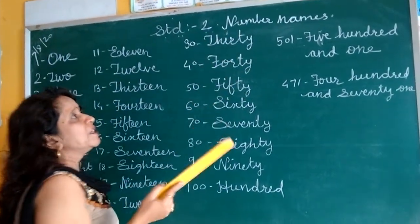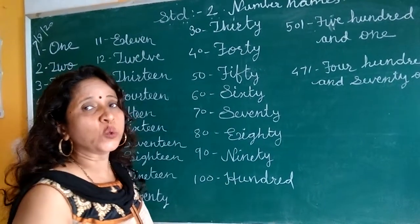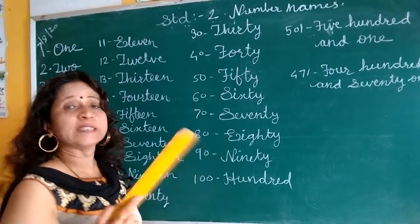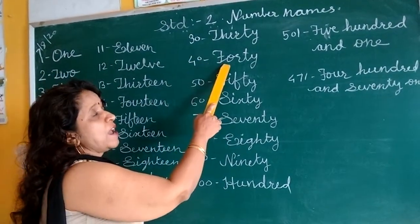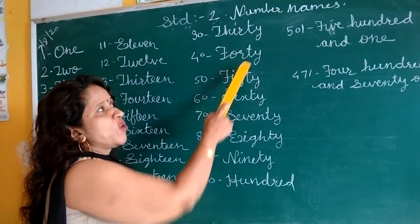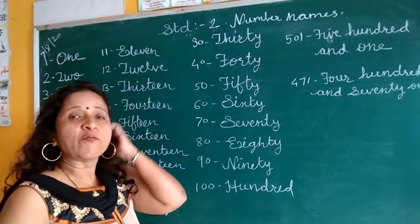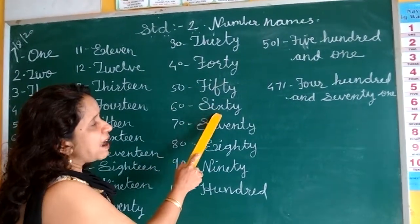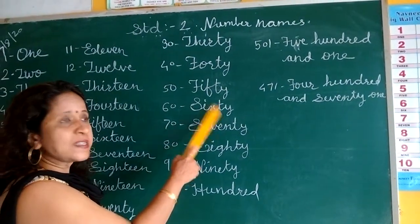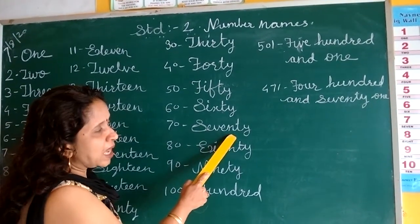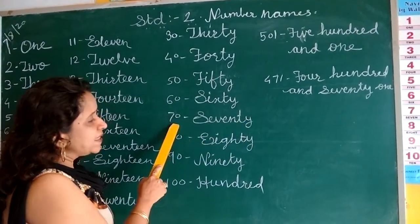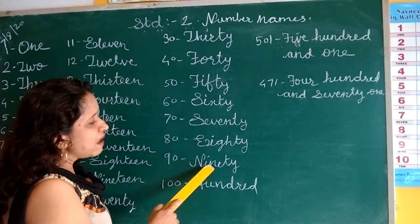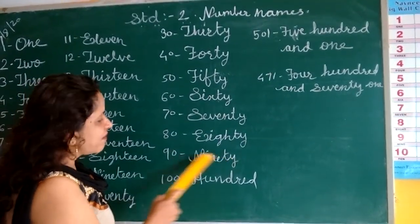Then again you can write 31, 32, 33 up to 39. After 39, which number will come? 40. So learn this spelling: F-O-R-T-Y, 40. F-I-F-T-Y, 50. S-I-X-T-Y, 60. S-E-V-E-N-T-Y, 70. E-I-G-H-T-Y, 80. N-I-N-E-T-Y, 90.